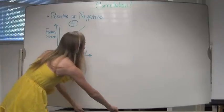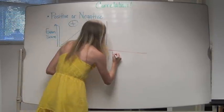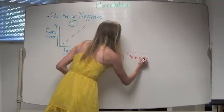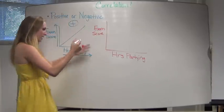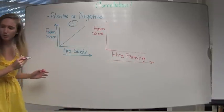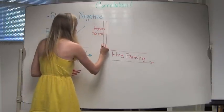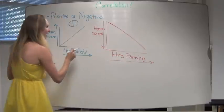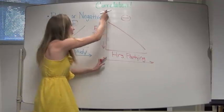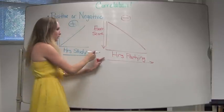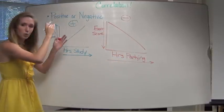Now let's look at another example. What if instead of hours spent studying at the library, I used the hours you spend partying the night before? So we're going to correlate hours spent partying with your exam score. The more hours we spend partying the night before a big exam, do you think we'll do better or worse? Worse — and we can see that this is a negative correlation. As one variable is increasing — the more we party — the lower our exam scores drop. As one variable gets larger, the other gets smaller.